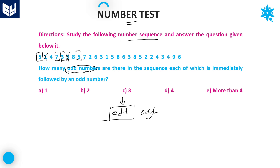Check whether you are getting one more odd number satisfying the condition. This odd number is not satisfying because it is followed by an even number, but the condition requires odd followed by odd. Next odd number 3 — yes, 3 is followed by an odd number. Up to here itself you have already got more than 4, so obviously the answer is Option E. There is no requirement to check the remaining odd numbers since the last option is more than 4. Option E is the right answer.